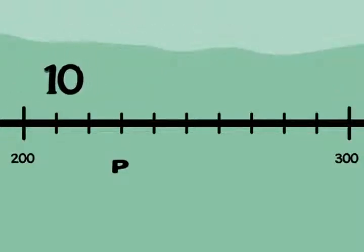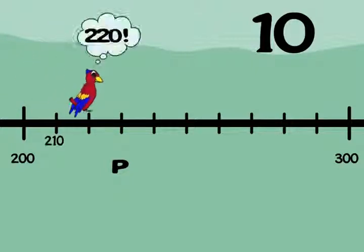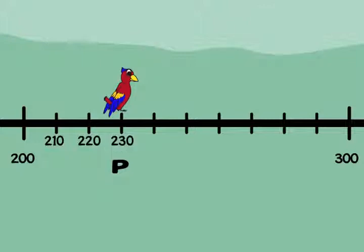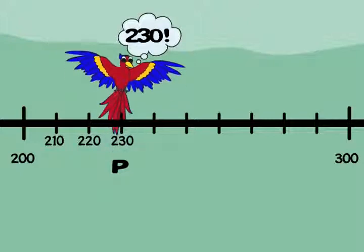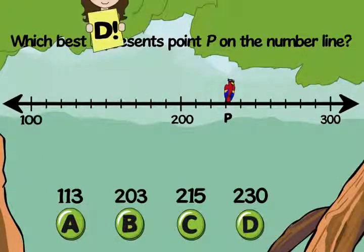Step three, now let's skip count by 10 to label the marks. 210, 220, 230. Aha, it looks like point P is at 230. So the best answer is D, 230.